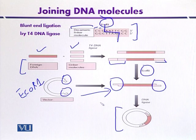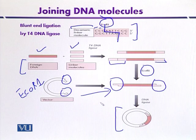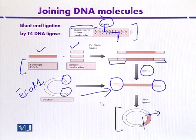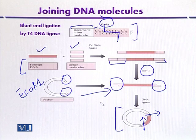One advantage of using a linker molecule is that when we transform it into a suitable host organism, it will replicate there. And if we want to isolate our gene of interest or the foreign DNA, because it contains a target site for EcoR1, it can be treated with EcoR1 restriction enzyme and the foreign DNA can be excised again. So blunt end ligation can be mediated by DNA ligase, but it is more advantageous to use linker molecules — synthetic DNA molecules that mediate ligation through the production of cohesive ends.